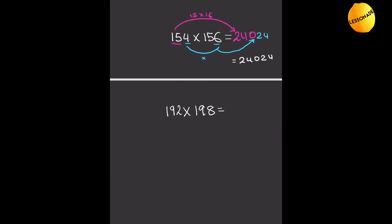Last but not least: 192 times 198. By the way, this question is much easier than you think. We take 19 and multiply it by its next highest number, which is 20. 19 times 20 is 380. Then we do 8 times 2, which is 16, and write that 16 there. So the answer is 38016.